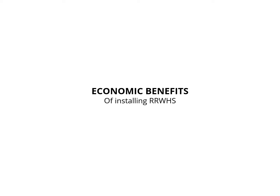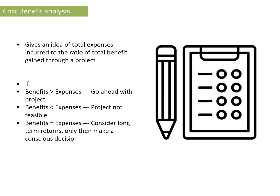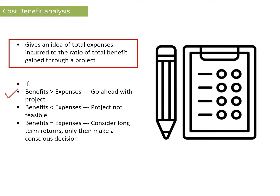When we do the cost calculation, it gives an idea of installation cost and the profit you will make. When you make the estimation, it gives an idea of total expense and your profit. You have to decide that if the benefit is more than the expense, then you can go ahead with the project. And if the benefit is less than the expense, then the project is not feasible.